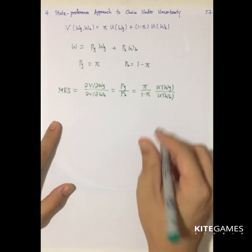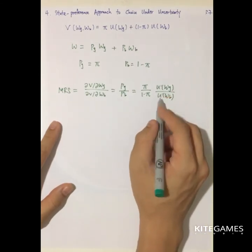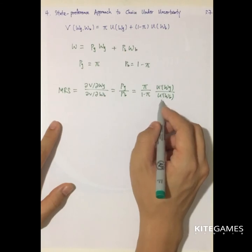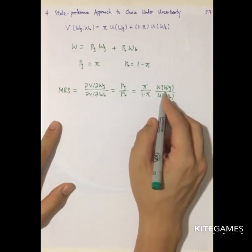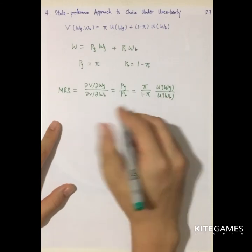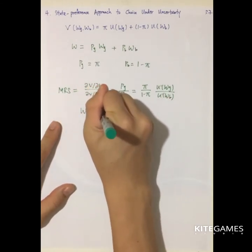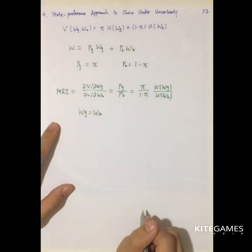So if the margin, at the equilibrium, marginal benefit should be equal to one. So this division should be equal to one. Or WG should be equal to WB if this is socially optimal.